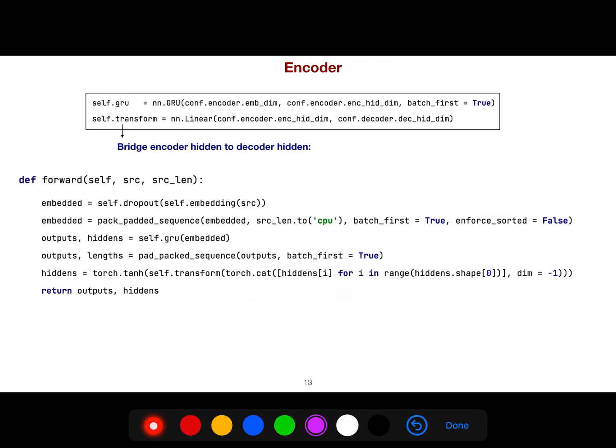And so this is the implementation of the encoder. We have bridge encoder, hidden to decoder hidden. And so we have used GRU here. We always, just like Fourier transform, you do Fourier transform and then you should do inverse Fourier transform. With this analogy, with this metaphor, you can use this as well. You pack something after giving it to your model GRU. Then you unpack it.